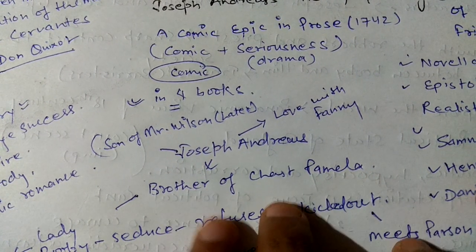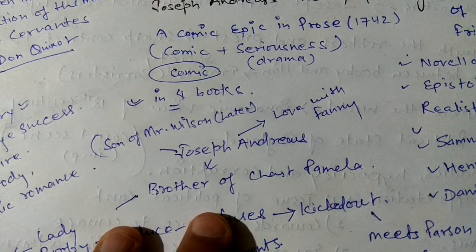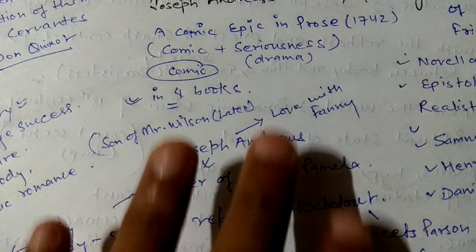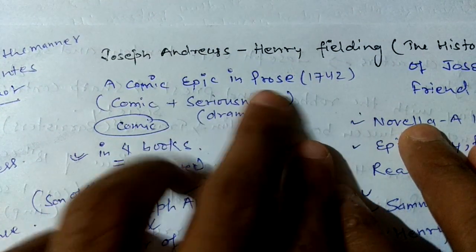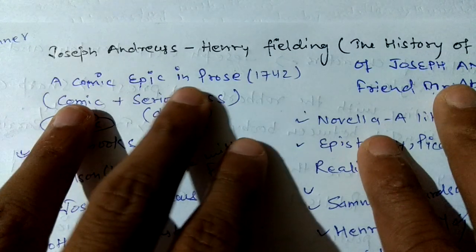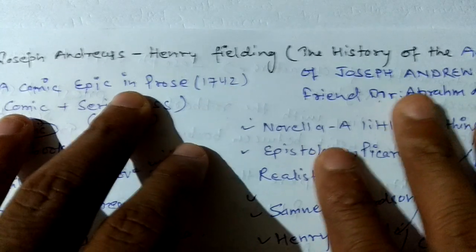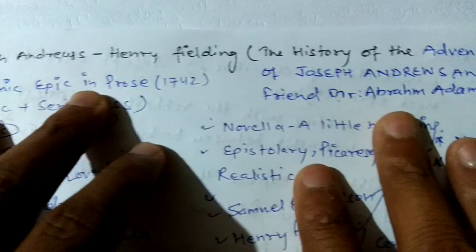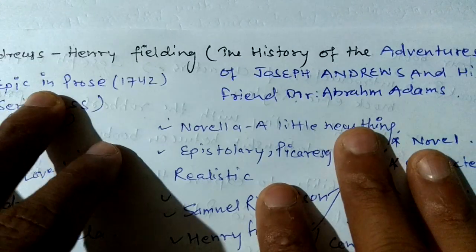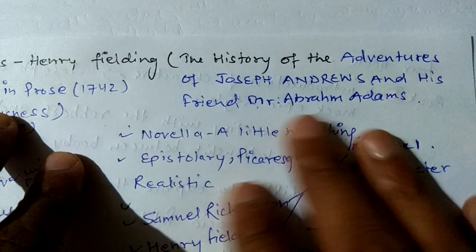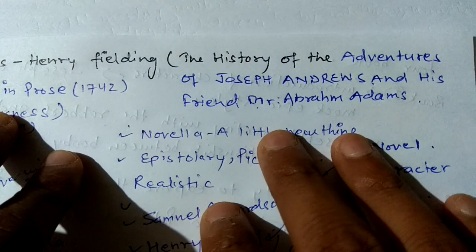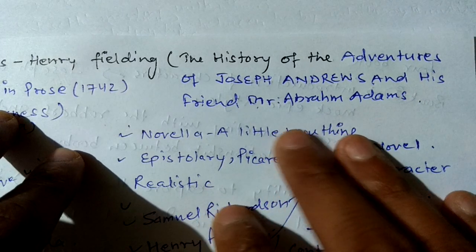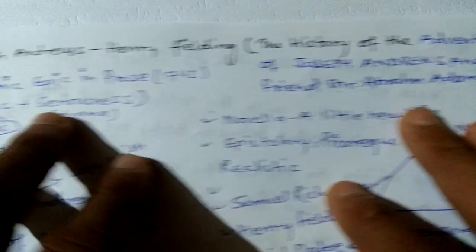Hey guys, today we are going to talk about Joseph Andrews by Henry Fielding. The full name of this work is The History of the Adventures of Joseph Andrews and His Friend Mr. Abraham Adams.